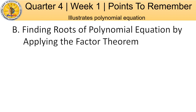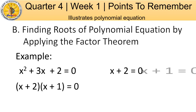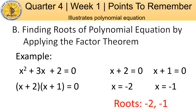Another way to find the roots of a polynomial equation is by applying the Factor Theorem. For example: x² + 3x + 2 = 0. First, factor the polynomial expression, then apply the Zero Product Property, and solve the resulting linear equations. The roots are negative 2 and negative 1.